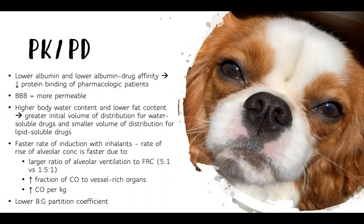They have a faster rate of induction with inhalant anesthetics due to a larger ratio of alveolar ventilation to FRC — 5:1 in neonates versus 1.5:1 in adults. Changing the vaporizer dial will affect concentration much faster in neonates than in adults. They also have an increased fraction of cardiac output going to vessel-rich organs like the brain, heart, liver, and kidneys, plus increased cardiac output per kilogram — all contributing to a faster rate of change with inhalants.